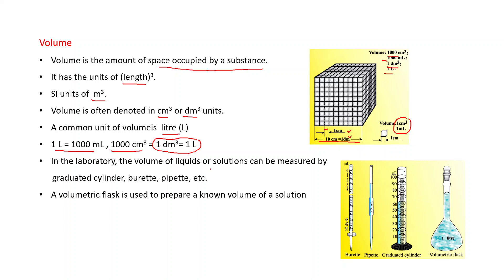In the laboratory, volume of liquids or solutions can be measured by graduated cylinder, burette, pipette. I think these two words are new for you, burette and pipette. A volumetric flask, this is also new for you. Volumetric flask is used to prepare a known volume of a solution. When you go to the chemistry lab, you can see these apparatus. This is burette, this is pipette, this is graduated cylinder, and this is volumetric flask.